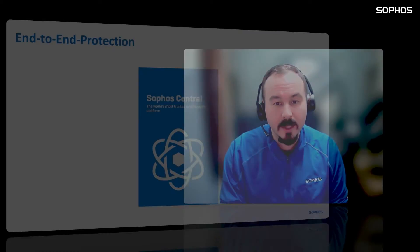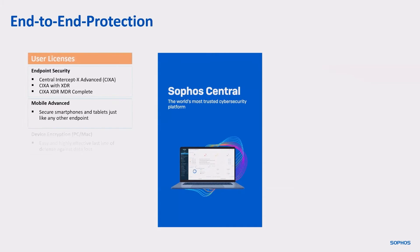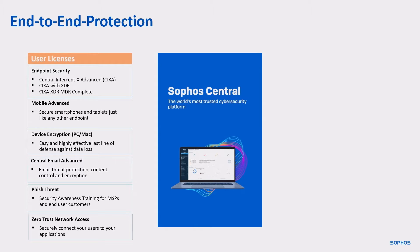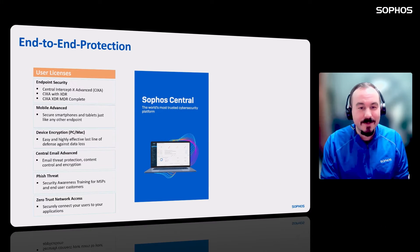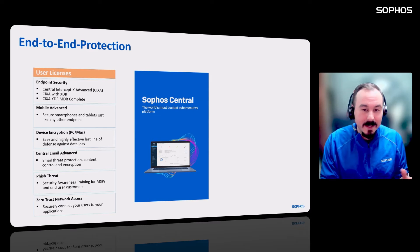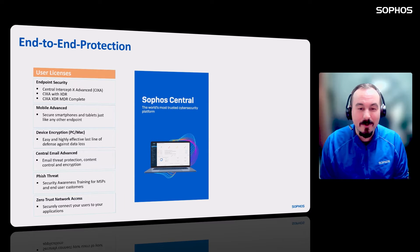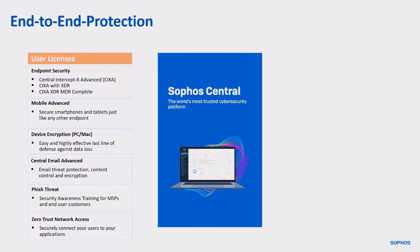Looking at the products available, we have very good parity with the termed offerings. If you're joining today, we have quite a bit available. That ranges from user-based licenses like endpoint security — InterceptX Advanced, XDR, XDR with MDR Essentials or Complete — we have mobile protection at all levels through MSP Flex: InterceptX for Mobile standard and advanced. We also have device encryption, email protection, phish threat, and zero-trust network access (ZTNA), all available on a per-user, per-month basis.